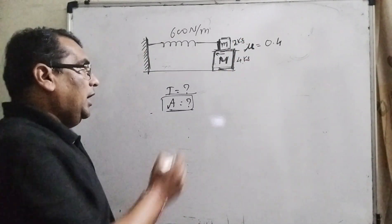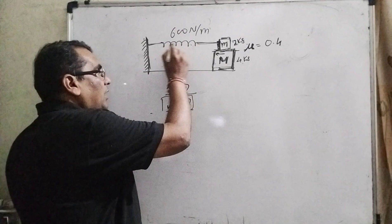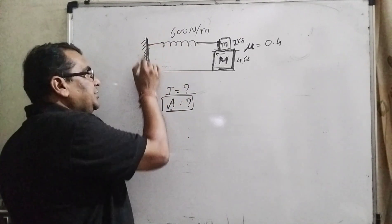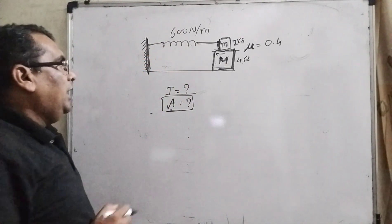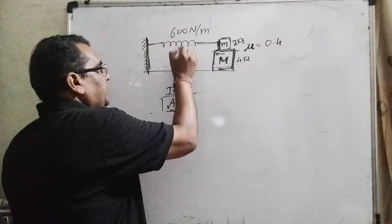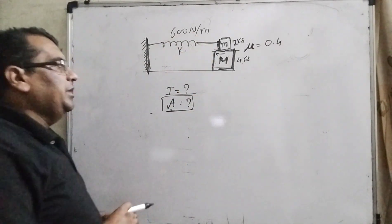The friction coefficient between these two blocks is mu equal to 0.4. This smaller block is connected with the spring, and the other end is connected with the rigid wall. The spring coefficient is 600 Newton per meter.